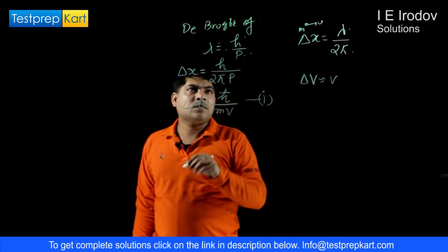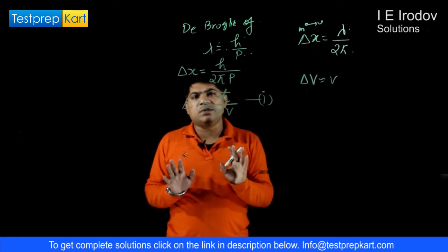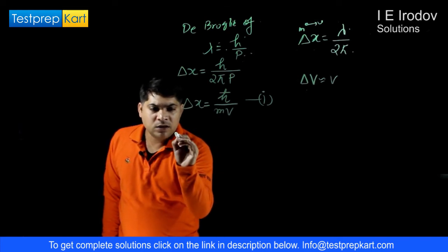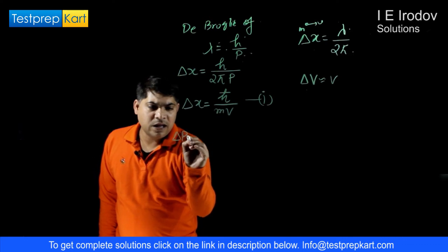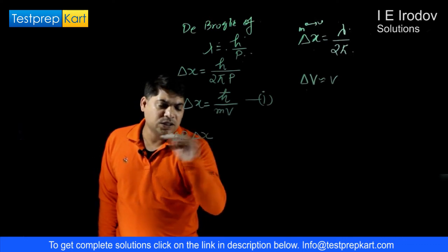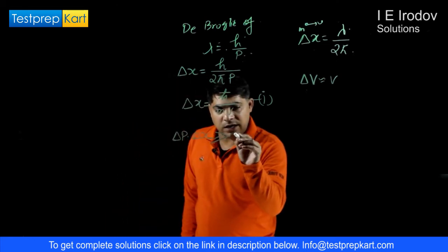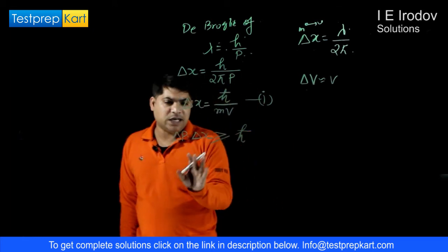We have got one relation. Now, if we apply the criteria of Heisenberg's uncertainty principle, then according to that the momentum of a particle and position of a particle cannot be estimated simultaneously and it must be greater or equal to h bar.